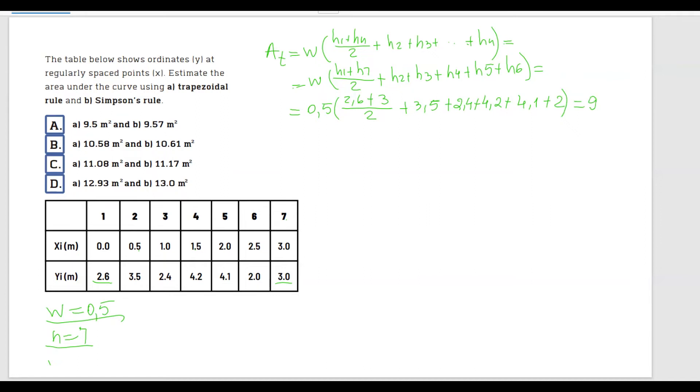And go ahead and use our calculator and you should get an area equal with 9.5 meters squared. So the trapezoidal rule gives us an area equal to 9.5 meters squared.